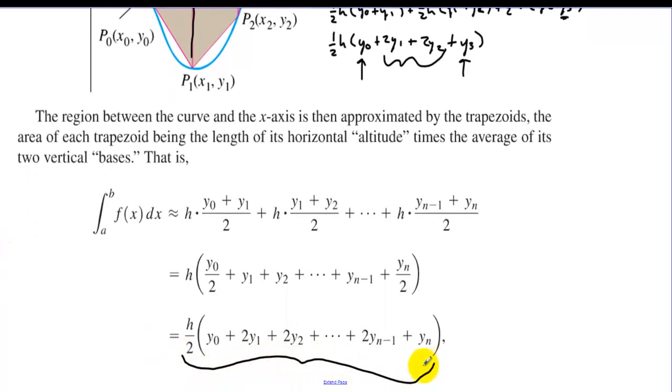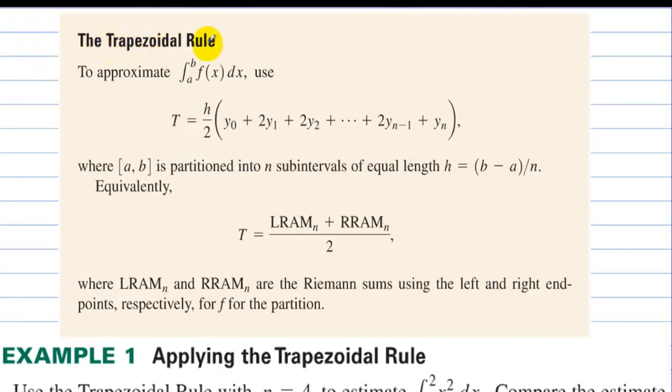That's kind of what this is saying right here. We use the middle ones twice and the one on the ends only one time. There's your trapezoid rule. The trapezoidal rule. To approximate the area under the curve, use the following. Where [a, b] is partitioned into n subintervals of equal length, h equals (b minus a) over n. Equivalently, the trapezoidal rule equals LRAM plus RRAM divided by 2. Where LRAM and RRAM are the Riemann sums using the left and right endpoints respectively for f for the partition.